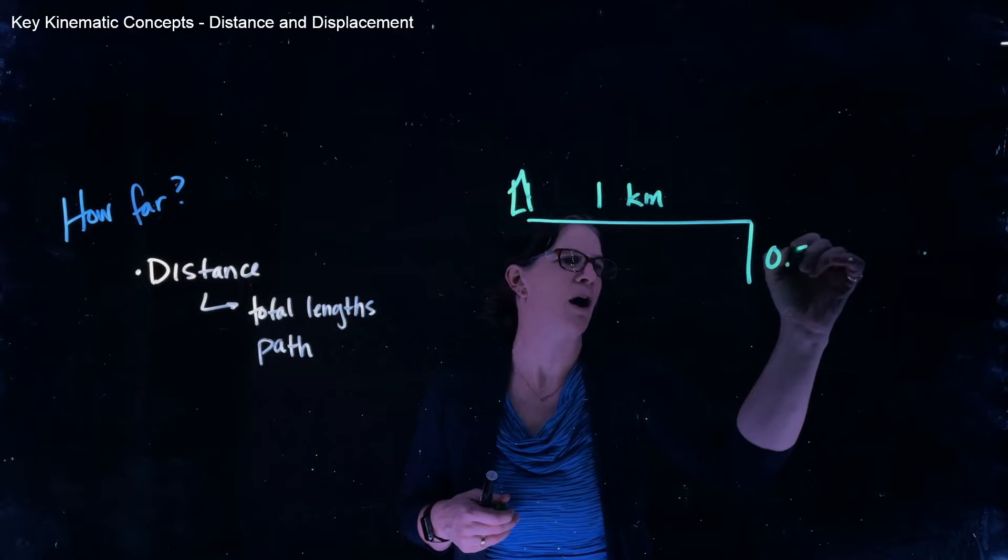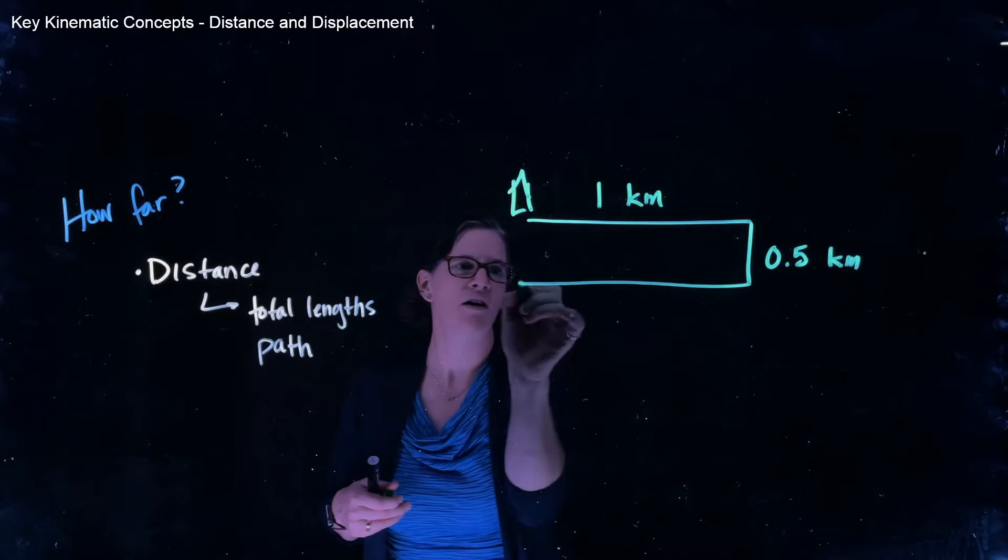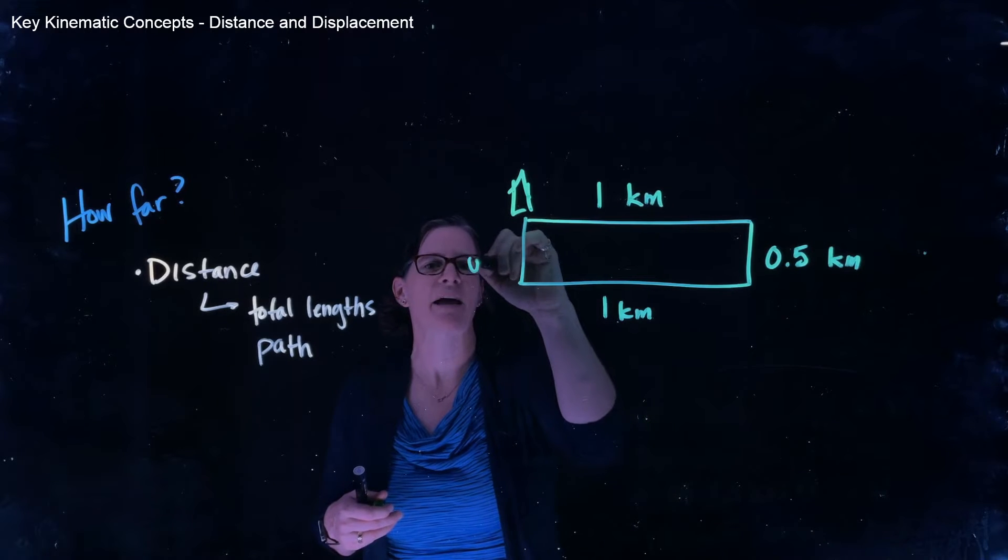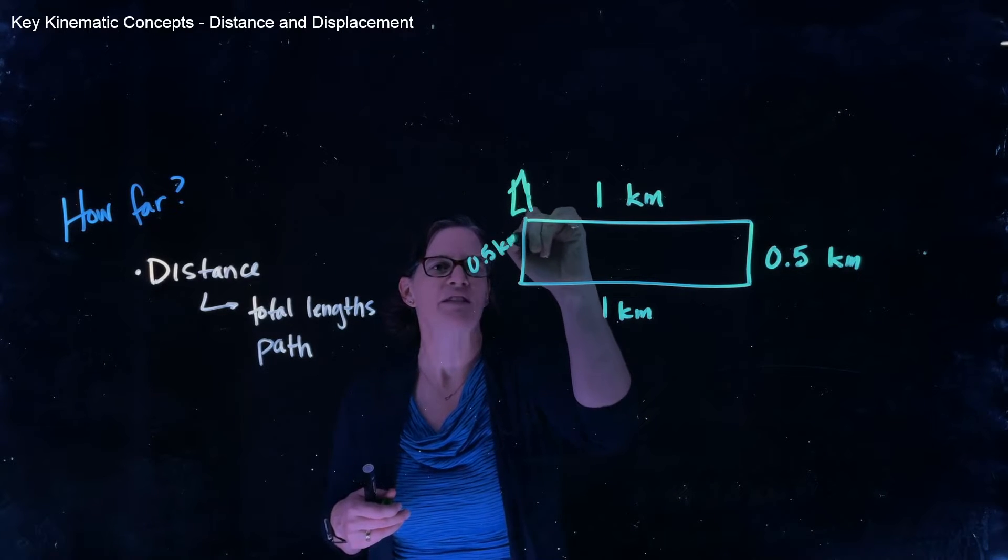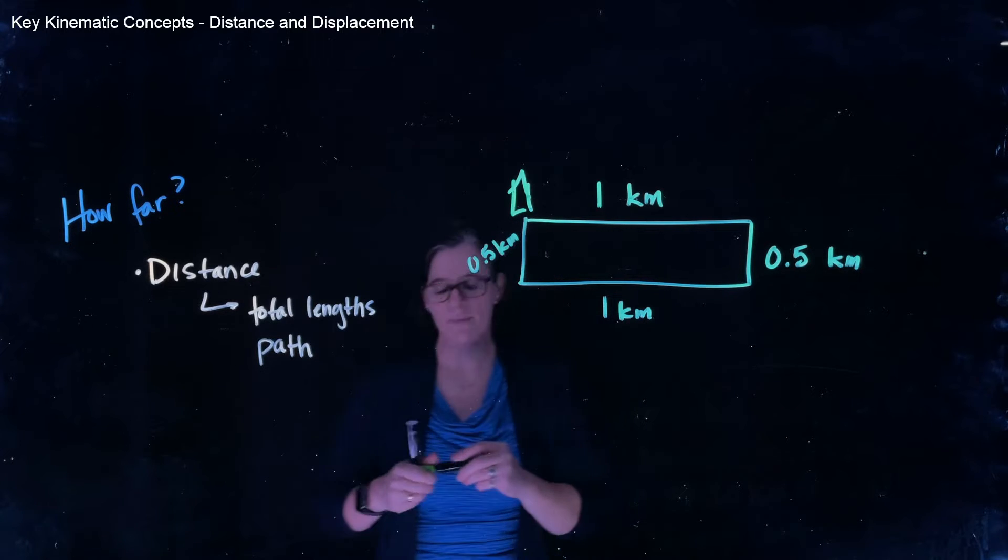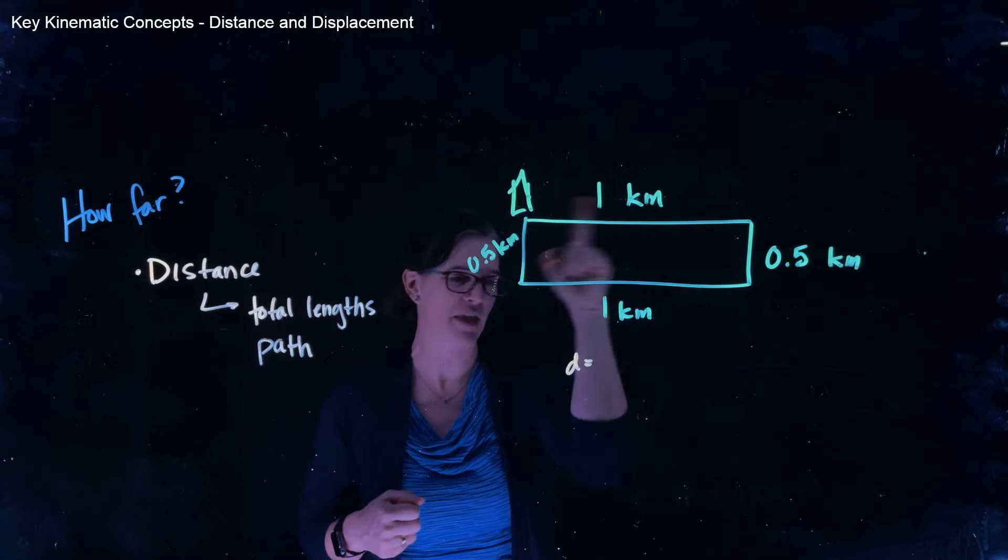Then she walks half a kilometer south, walks all the way back one kilometer to the west, and then she ends up back at her farmhouse, which is a half a kilometer, an additional half a kilometer.